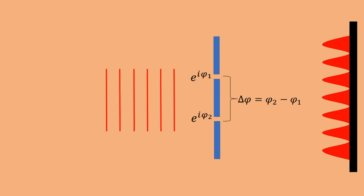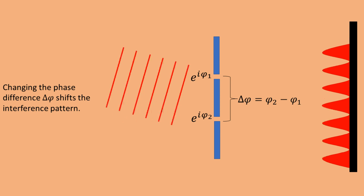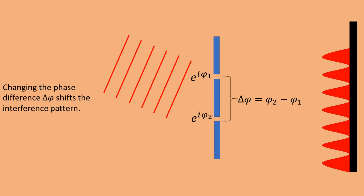Either by checking path length differences, or by calculating the Fraunhofer diffraction integral, one can find that the intensity in the far field oscillates as a function of position, which is our interference pattern. If we change the phase difference between the two slits, which we could do by changing the angle of the incident plane wave, we can shift the position of the interference pattern.